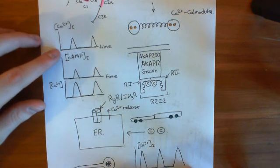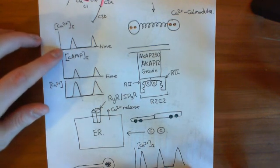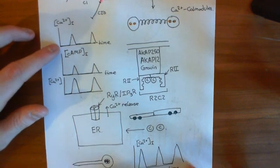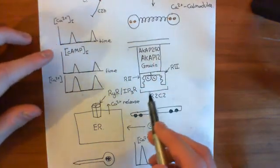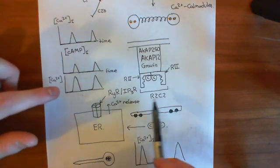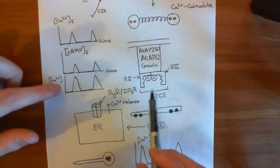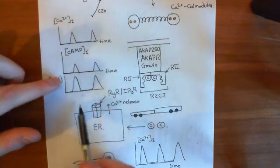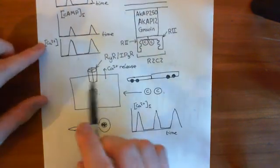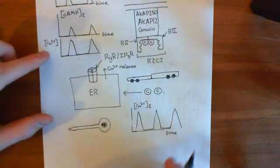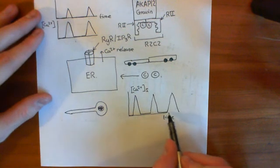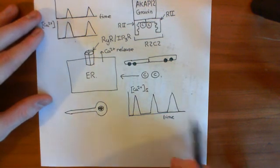The action potential produces a tiny little calcium pulse through voltage-gated calcium channels. We've seen how that pulse is amplified through oscillations in cyclic AMP, which activate oscillations in activity of protein kinase A, which then activates either the ryanodine receptor or the IP3 receptor to cause oscillatory release of calcium from the ER. So you get oscillations in calcium level in the axon growth cone.